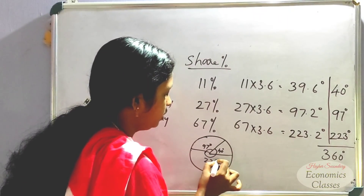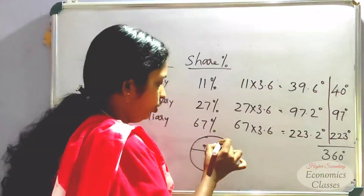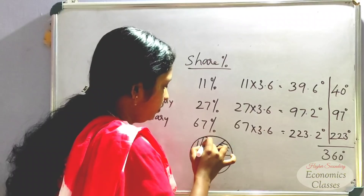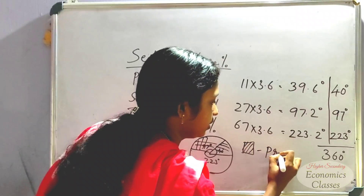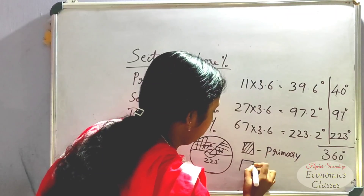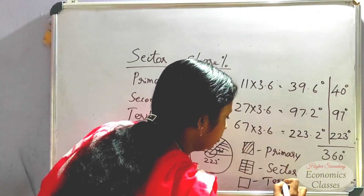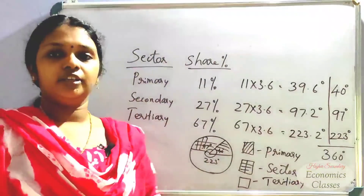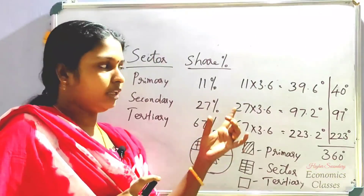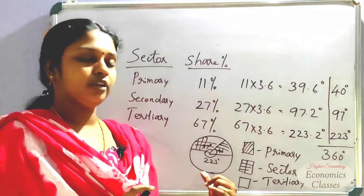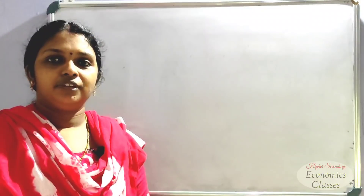It is quite perfect — it's more of an impression. If you want to label the sections, you can add the primary section, the secondary section, and the tertiary section labels in the respective parts of the pie diagram.